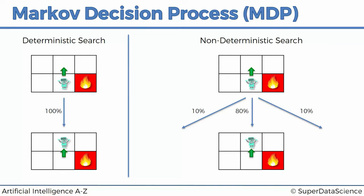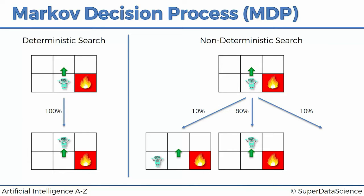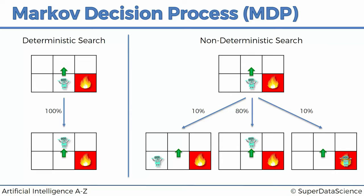But then with a 10% chance, when he wants to go up, he'll actually go to the left — just because that's how the environment works, that's the world he lives in. And with another 10% chance, he'll actually go right, and in this case he'll fall into the fire pit. That is an example of non-deterministic search, a stochastic process.